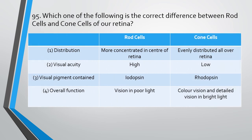Question number 95. Which one of the following is the correct difference between rods and cone cells of our retina? Distribution: rods are more concentrated in the center of retina, cones are distributed all over the retina. Visual acuity: high for rods, low for cones. Visual pigment: iodopsin for rods, rhodopsin for cones. Overall function: rods — vision in poor light; cones — color vision and detail vision in bright light. The correct difference is the fourth one, overall function. Rods are concerned with scotopic vision, i.e., night vision, and cones are concerned with photopic vision, i.e., daytime vision.